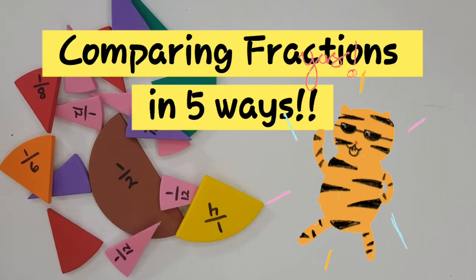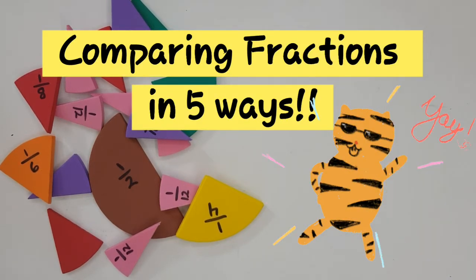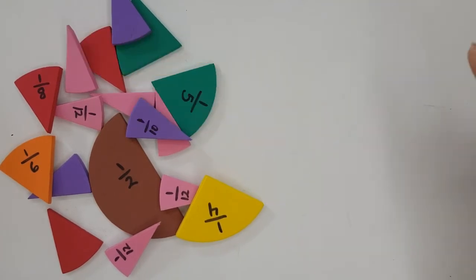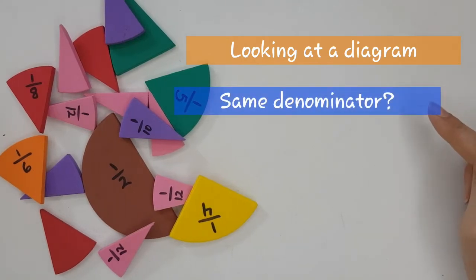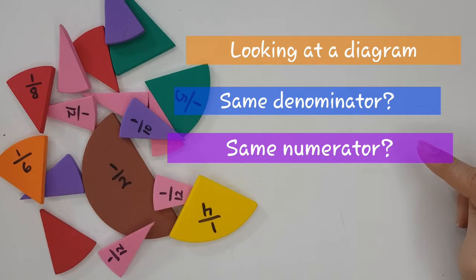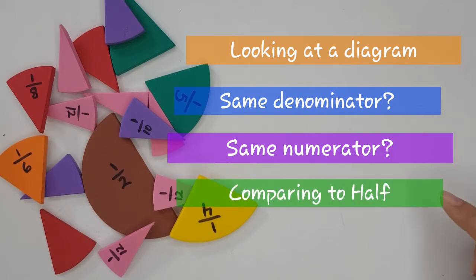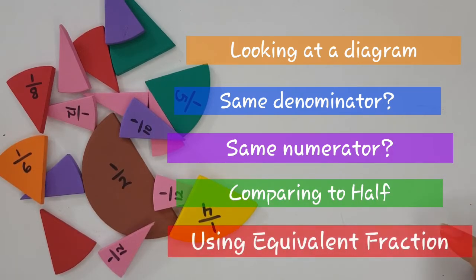Hi kids, today we are going to learn five ways of how to compare fractions. The five ways are: looking at the diagram, checking if they have the same denominator, checking if they have the same numerator, comparing to half, or using equivalent fractions to find the same denominator. Here we go!